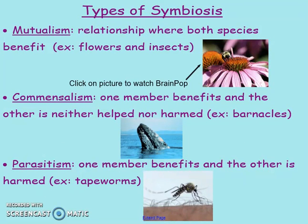The three types of symbiosis are mutualism, commensalism, and parasitism. Mutualism is where both species benefit — for example, flowers and insects: the flowers get pollinated and the insects get their food source. This is a positive-positive relationship. Commensalism is where one member benefits and the other is neither helped nor harmed — a positive-neutral relationship. Parasitism is where one member benefits and the other is actually harmed — for example, tapeworms in your digestive system get a food source, but that harms you.